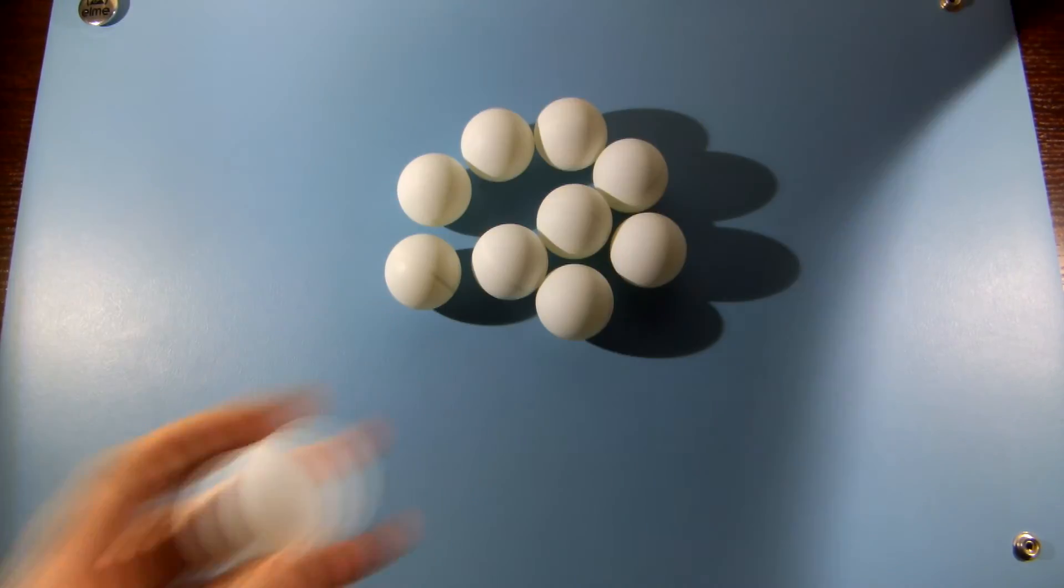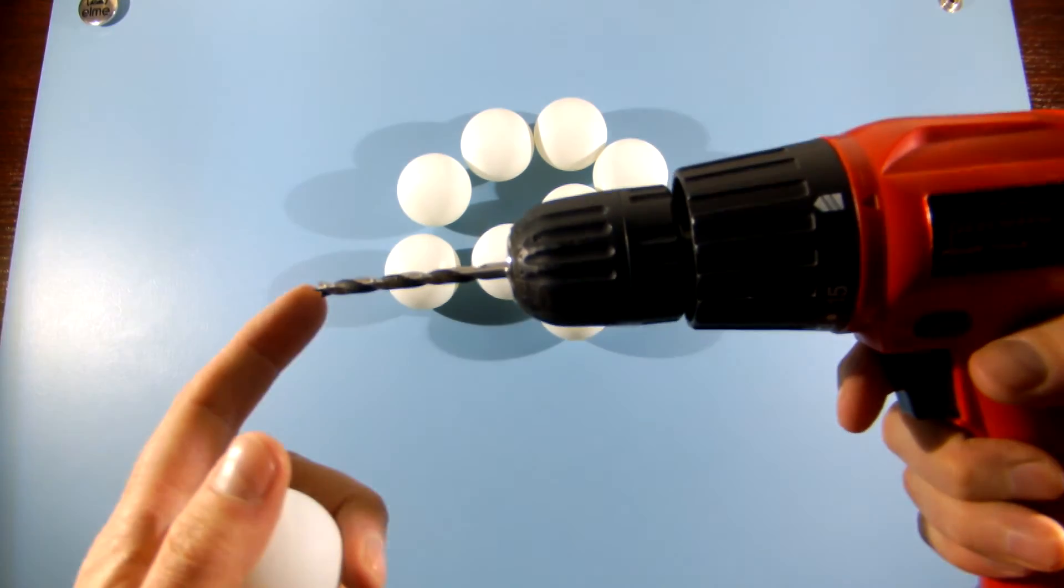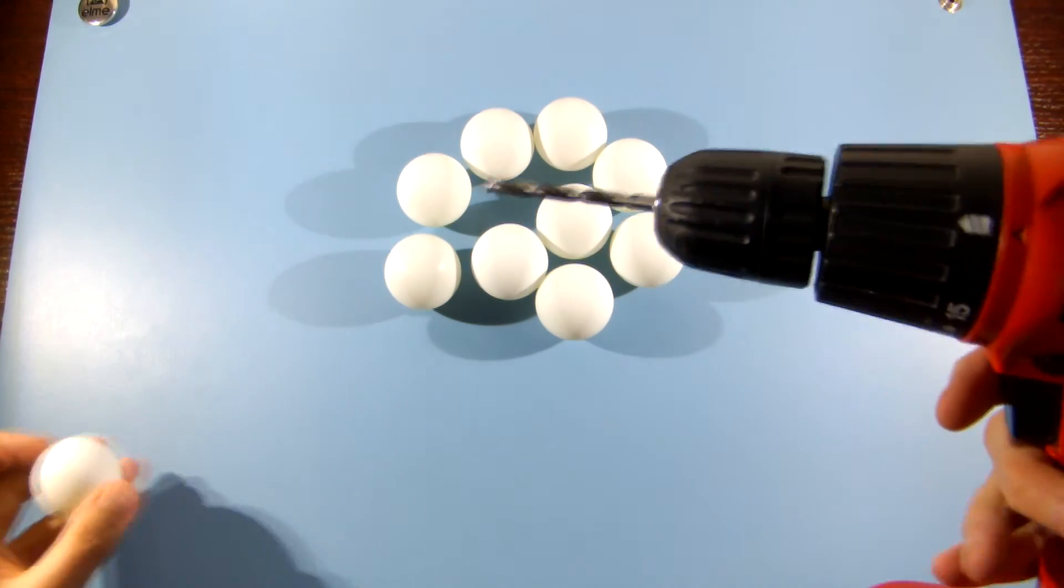We want to drill a single hole in each ball. The size of the hole should be exactly the same as your LEDs diameter.